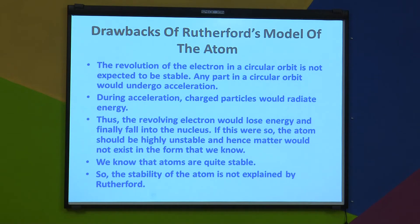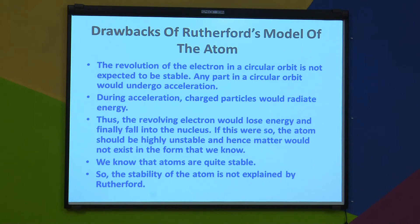His second observation was that very few alpha particles got deflected from their original path. So he said that protons — that is, positively charged particles — are present in a very small space. His third observation was that some alpha particles, that is, one out of every 12,000 alpha particles, passed back, meaning they rebounded, which concluded that the protons are concentrated in a very small space.